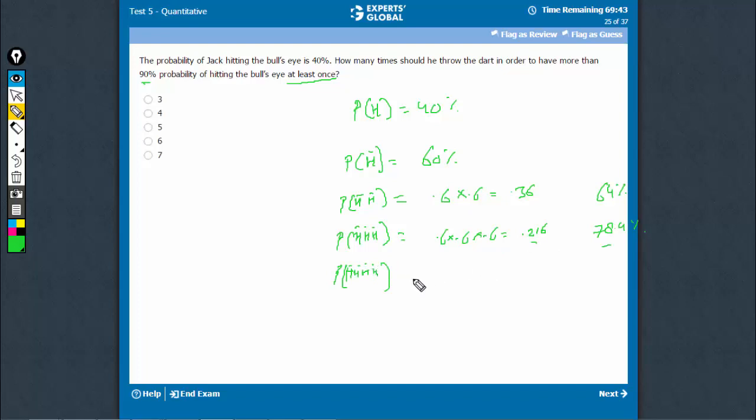Four times not hitting would be 0.216 × 0.6 ≈ 0.13. In the fifth attempt, every time it doesn't hit, 0.13 × 0.6 ≈ 0.08.